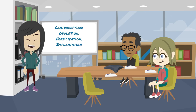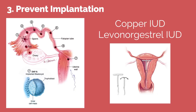The final category of methods prevents implantation. Both hormonal and non-hormonal IUDs create inflammation which is inhospitable to implantation. Progestins cause endometrial thinning, and this resting-state endometrium does not allow for implantation.